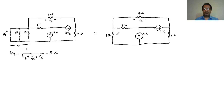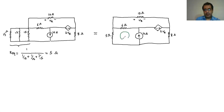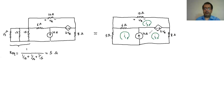Now that the circuit is simplified, the next step is to assign mesh currents. The current in the first loop is I1 going clockwise, the second loop is I2 clockwise, and the top loop is I3 clockwise. So we have I1, I2, and I3.